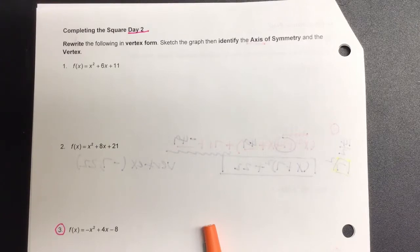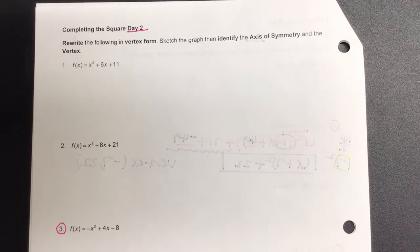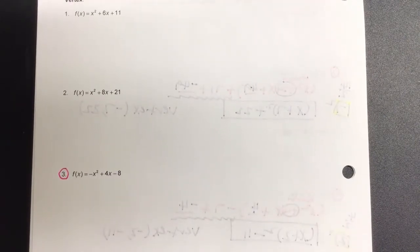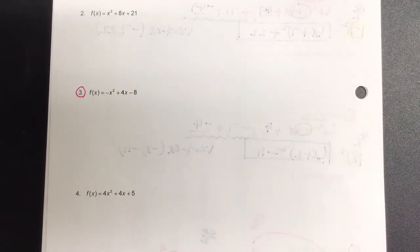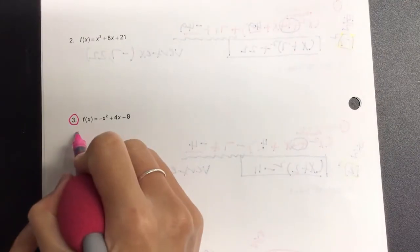In vertex form, sketch and graph, then identify the axis of symmetry and the vertex. Alright, so we're completing the square just like yesterday. So let's look at number 3. What do I need to factor out because x squared has something other than just the 1? The negative. So let's factor out the negative.